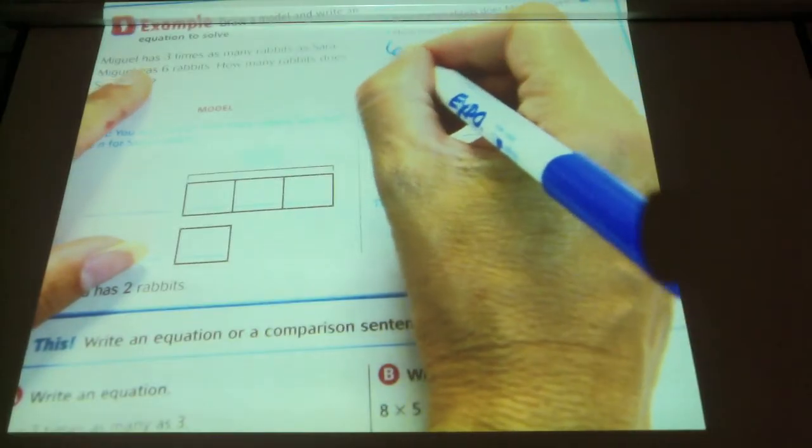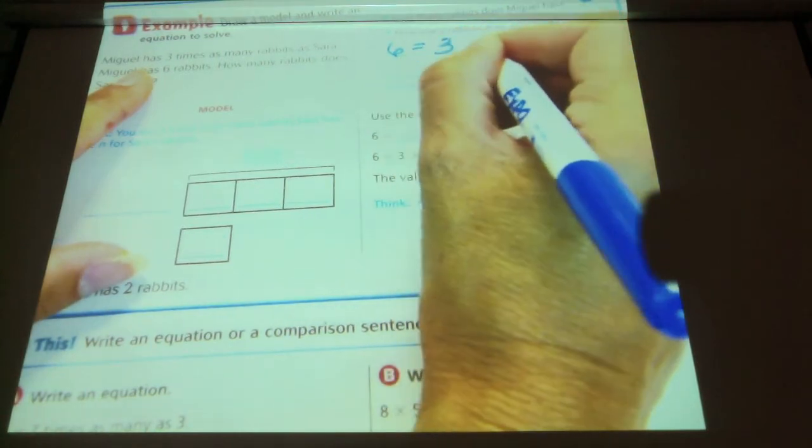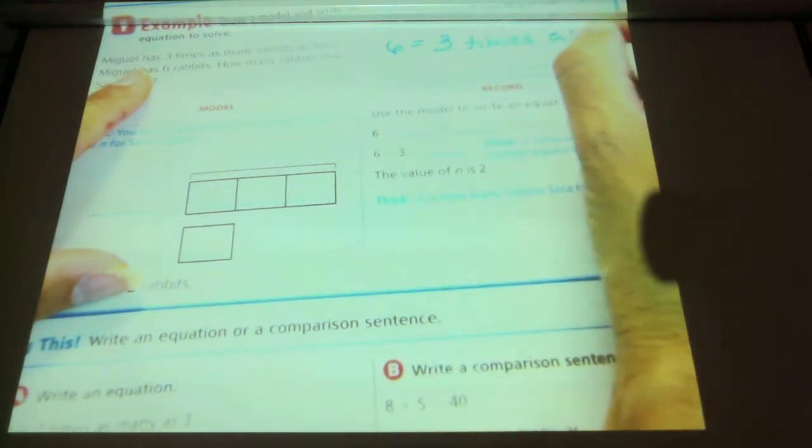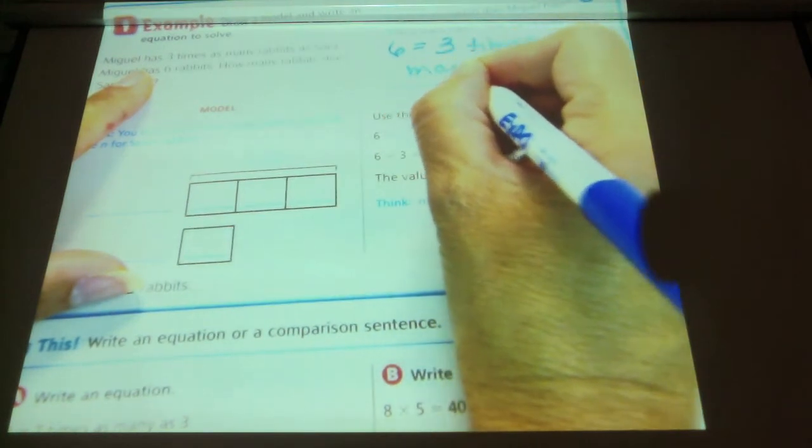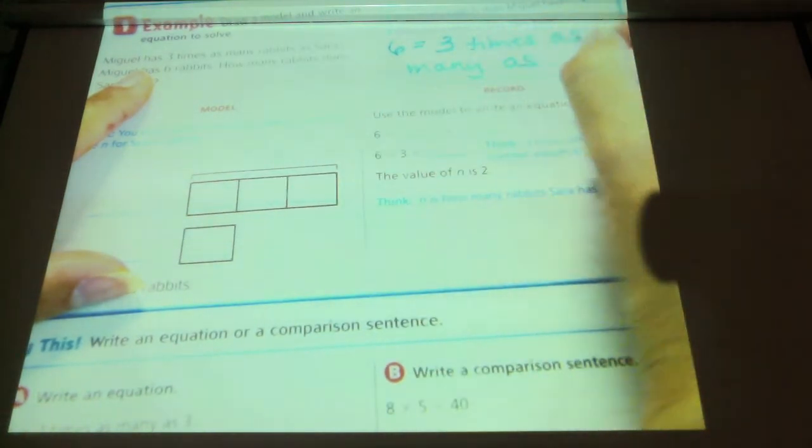Miguel has 6, which is 3 times as many as Sarah. Sorry, I misspoke the 3 there. Okay?